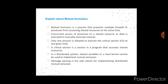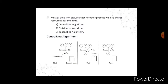In a distributed system, shared variables or a local kernel cannot be used to implement mutual exclusion. Message passing is the sole means of implementing distributed mutual exclusion. Mutual exclusion ensures that no other processes will share the resource at any time. Three algorithms are presented: the centralized algorithm, distributed algorithm, and token ring algorithm.